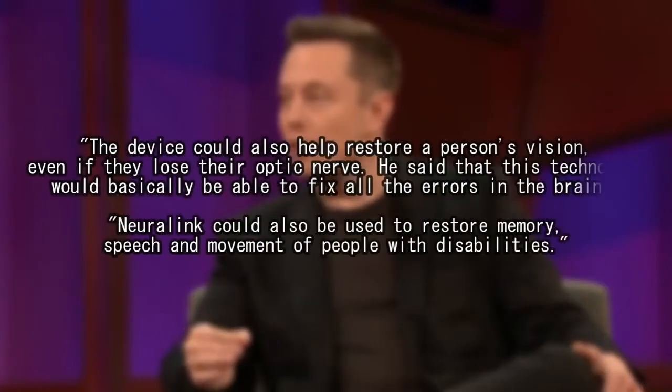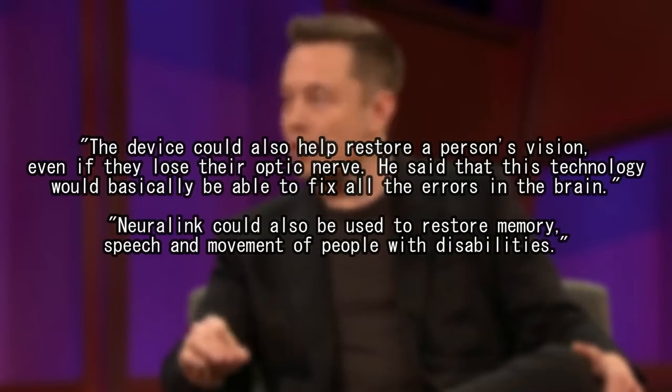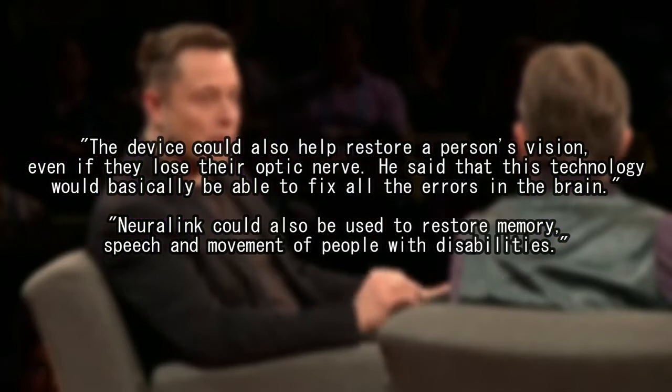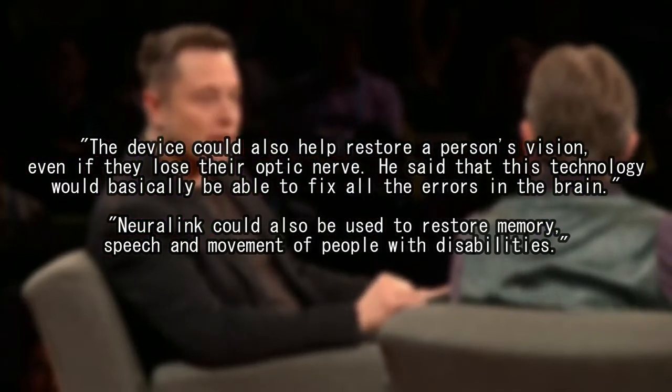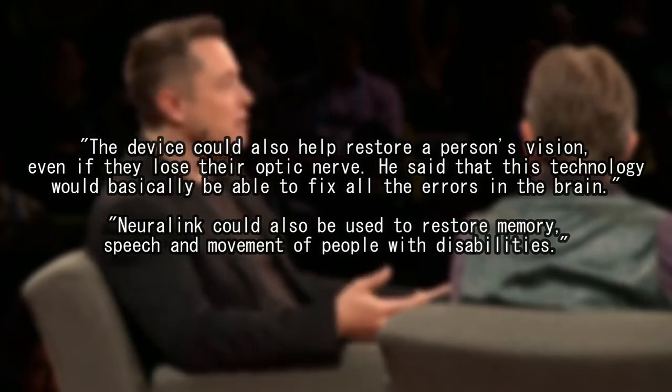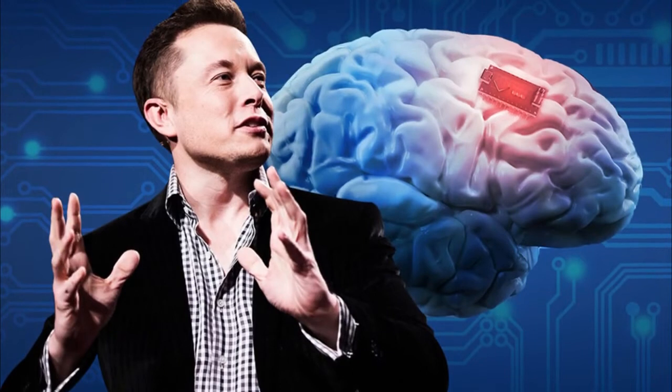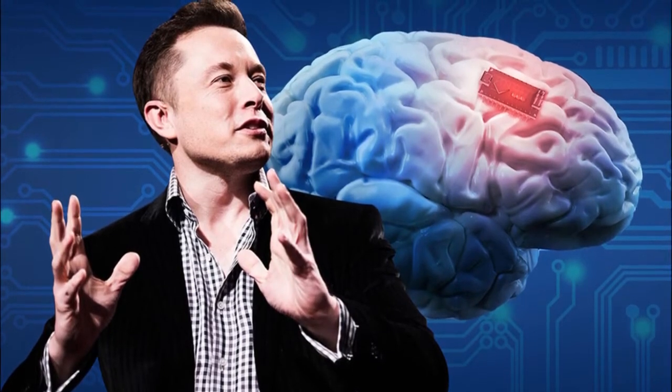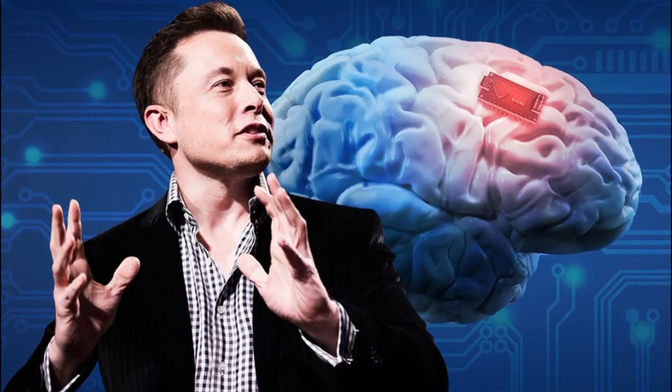In an interview, Elon Musk said the device could also help restore a person's vision even if they lose their optic nerve. He said that this technology would basically be able to fix all the errors in the brain. Musk added that Neuralink could also be used to restore memory, speech, and movement of people with disabilities. Unleashing the full symbiosis of technology and the human brain, it will also be able to help people interact with each other without actually having to speak, Musk said.